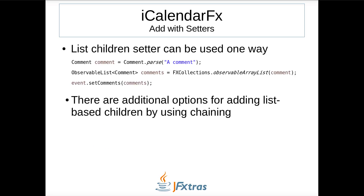Some child elements can exist more than one time. These elements are contained in an observable list. The observable list can only be set one way, by assigning a reference. There are additional options for adding list-based children by using chaining, as you will soon see.